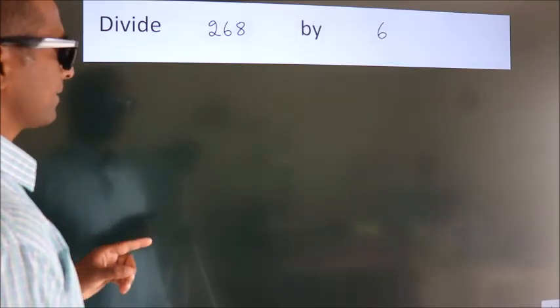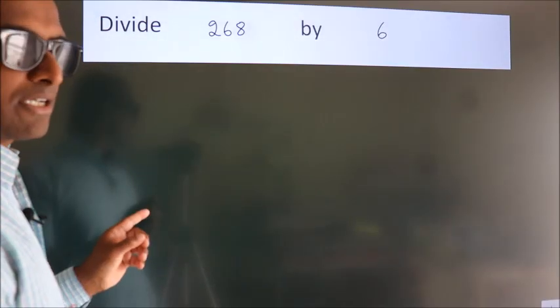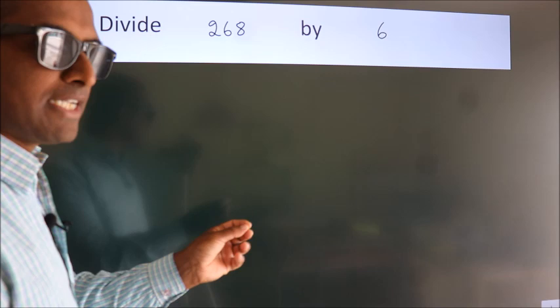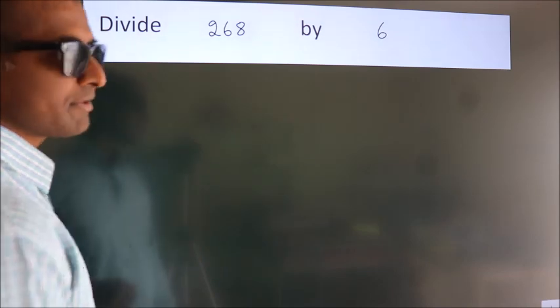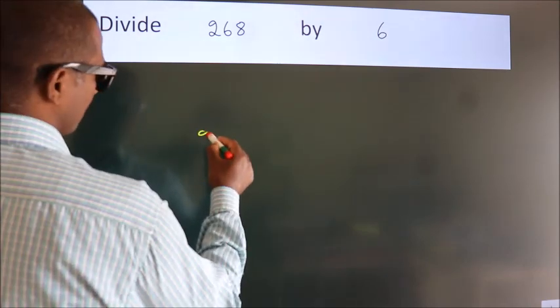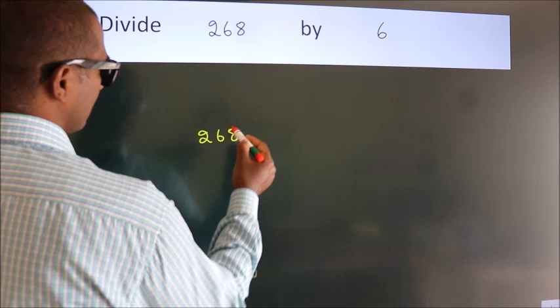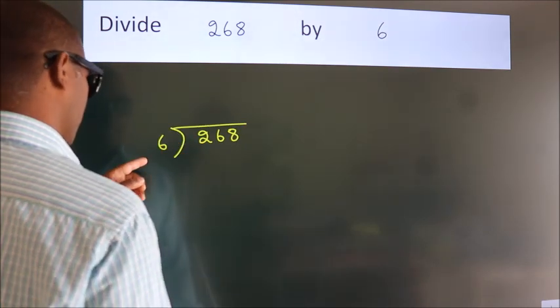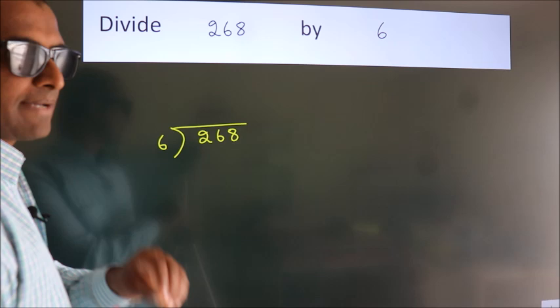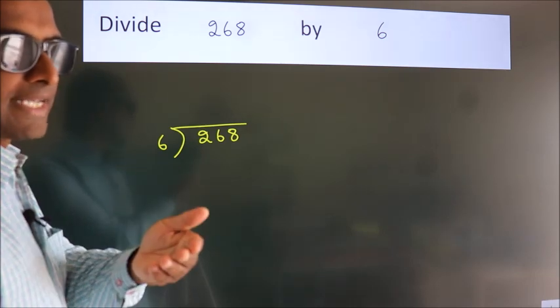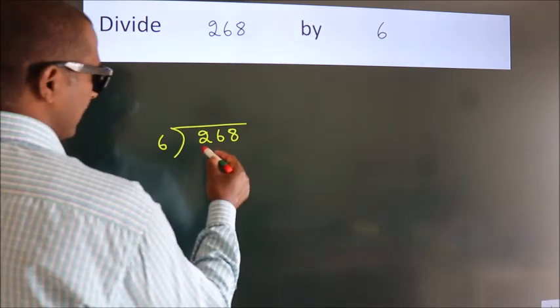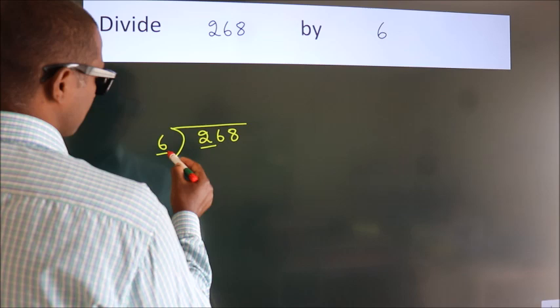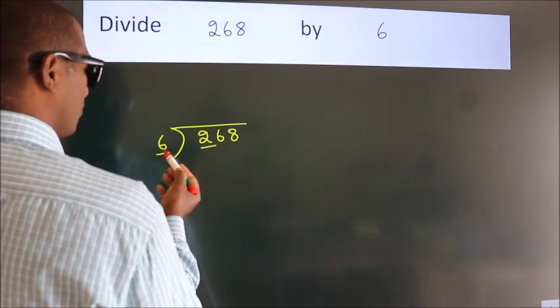Divide 268 by 6. To do this division we should frame it in this way: 268 here, 6 here. This is your step one. Next, here we have 2. Here 6, 2 is smaller than 6.